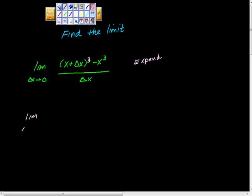So I'm going to rewrite this limit as the change of x goes to zero. And when we expand this, remember binomial expansion, we're going to get x cubed plus 3x squared change of x plus 3x change of x squared plus change of x cubed.